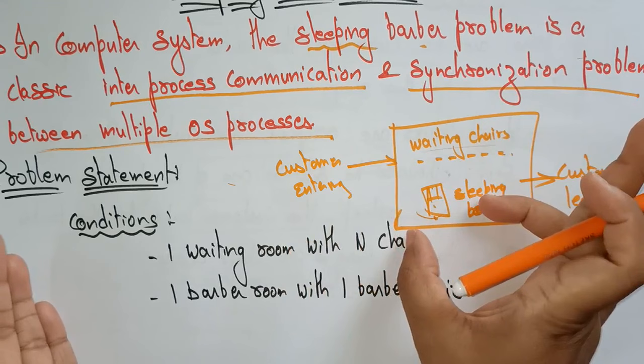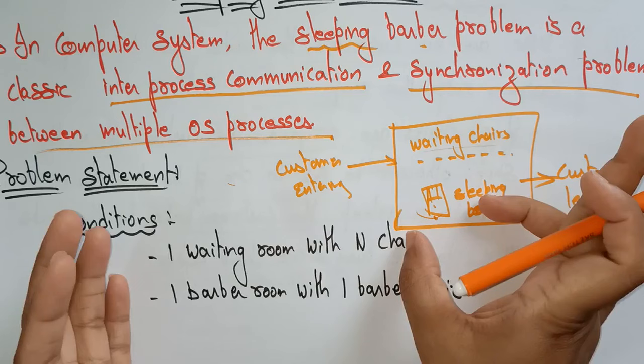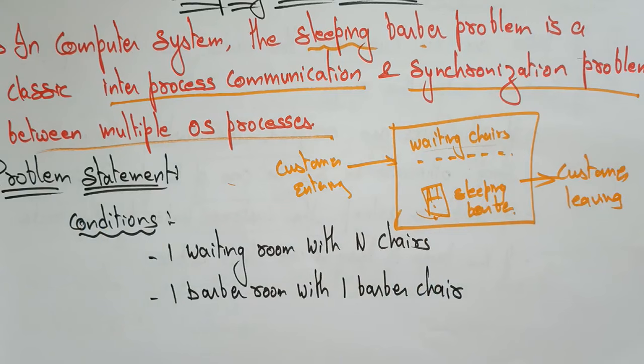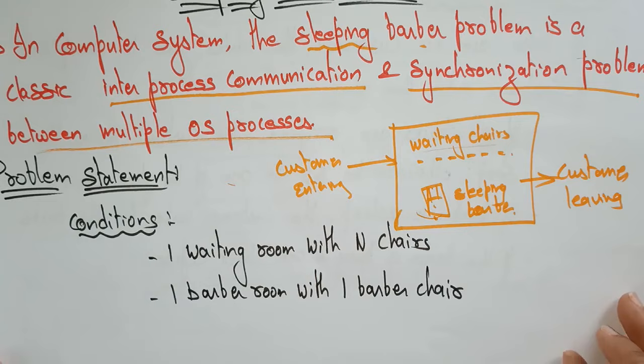This models how the operating system synchronizes internally when multiple processes arrive. If the system is executing one operation, the other processes must wait a certain amount of time. Inter-process communication follows the technique of the Sleeping Barber Problem, and it also synchronizes problems between multiple operating system processes using this technique.